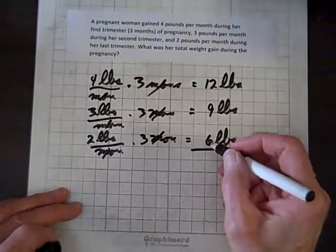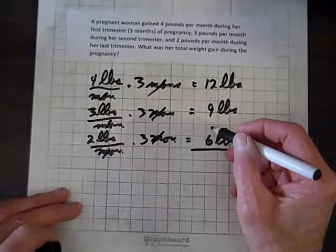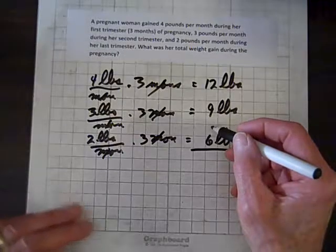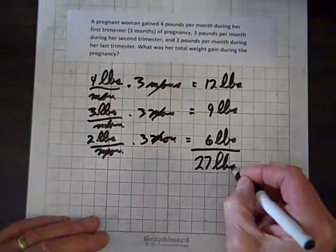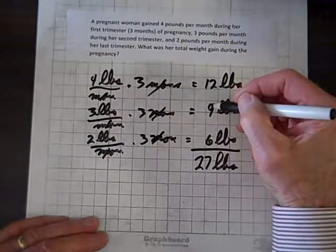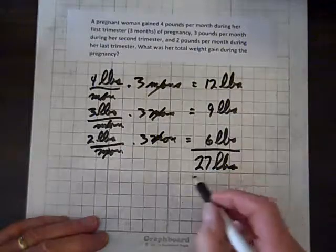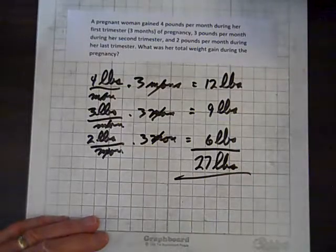Let's add them up and we'll know how much weight she gained during the pregnancy. So, let's see. 9 and 6 is 15. And 15 and 12, I get 27 pounds, don't you? Yeah, that's going to be 21 and 6 is 27. Hey, we got it. She gained 27 pounds.